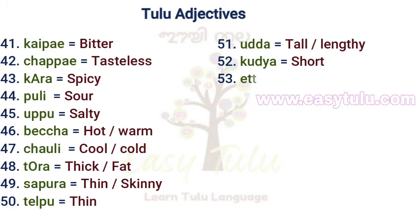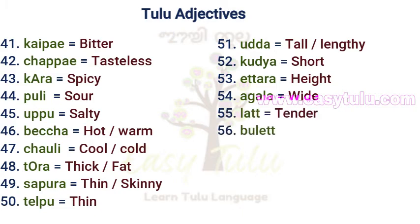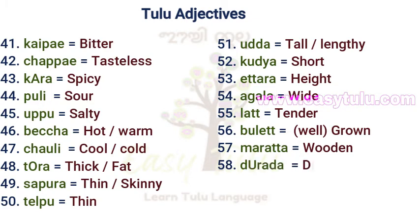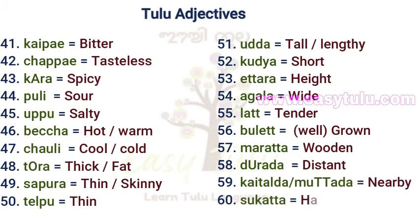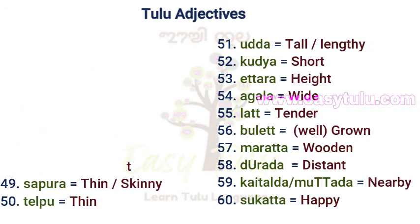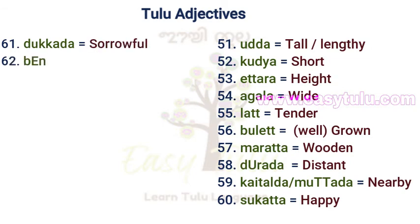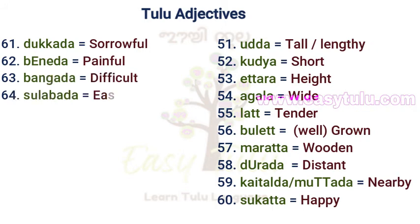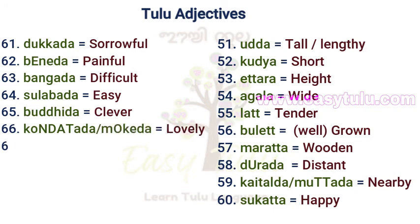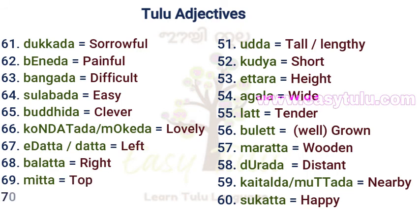Short. Ethera — Height. Agala — Wide. Lath — Tender. Bullitt — Grown. Maratha — Udun. Douratha — Distant. Kaithalatha or Muttaatha — Nearby. Sukatha — Happy. Dukkatha — Sorrowful. Bainatha — Painful. Bangatha — Difficult. Sulabatha — Easy. Buddhida — Clever. Kondatatha or Mokeatha — Lovely. Edatha or Dutta — Left. Balatha — Right. Mithatha — Top.